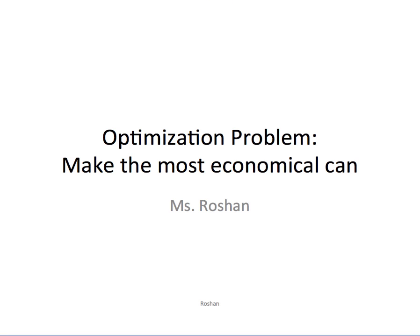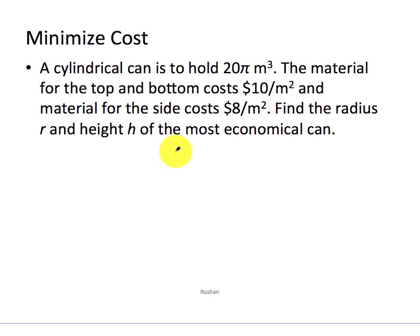In this lesson we're going to talk about the optimization problem, specifically making the most economical can. A cylindrical can is to hold 20π cubic meters. The material for the top and bottom costs $10 per square meter and material for the side costs $8 per square meter. Find the radius r and height h of the most economical can.